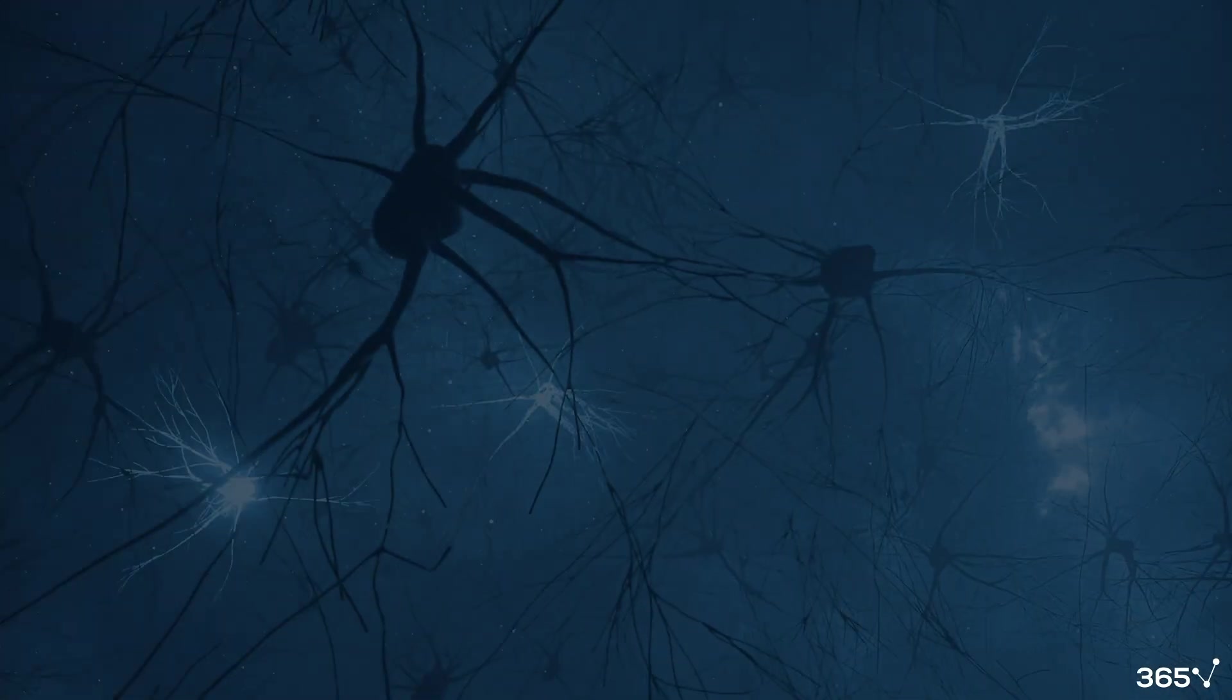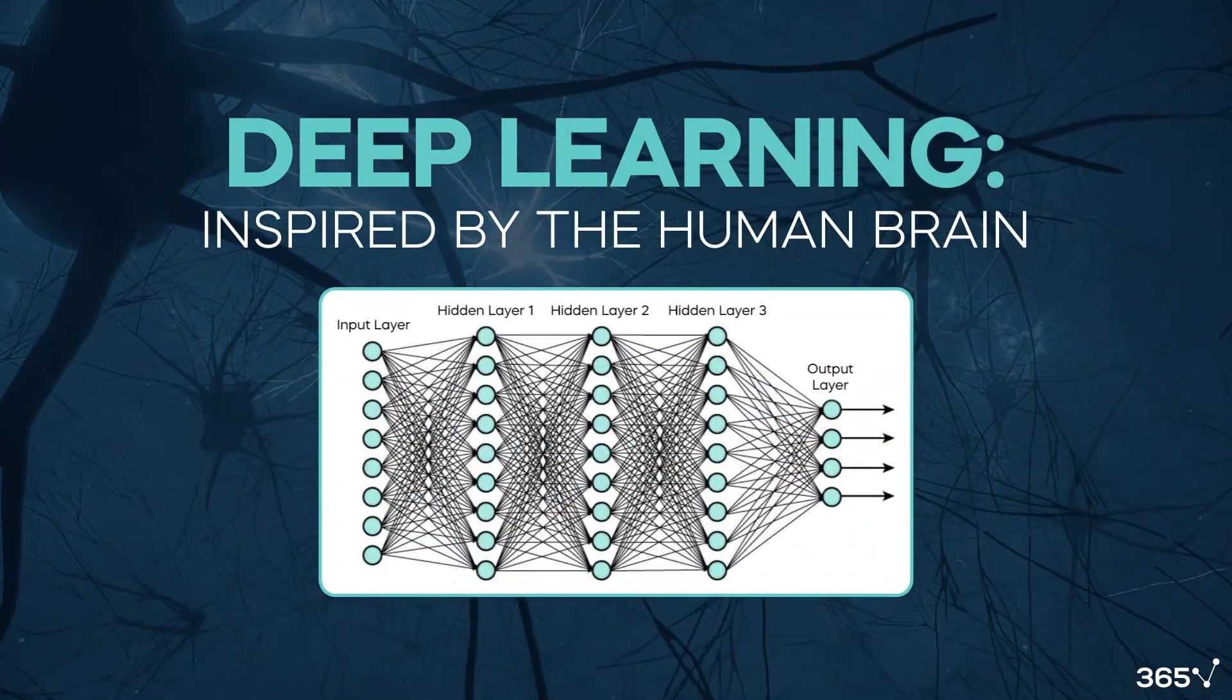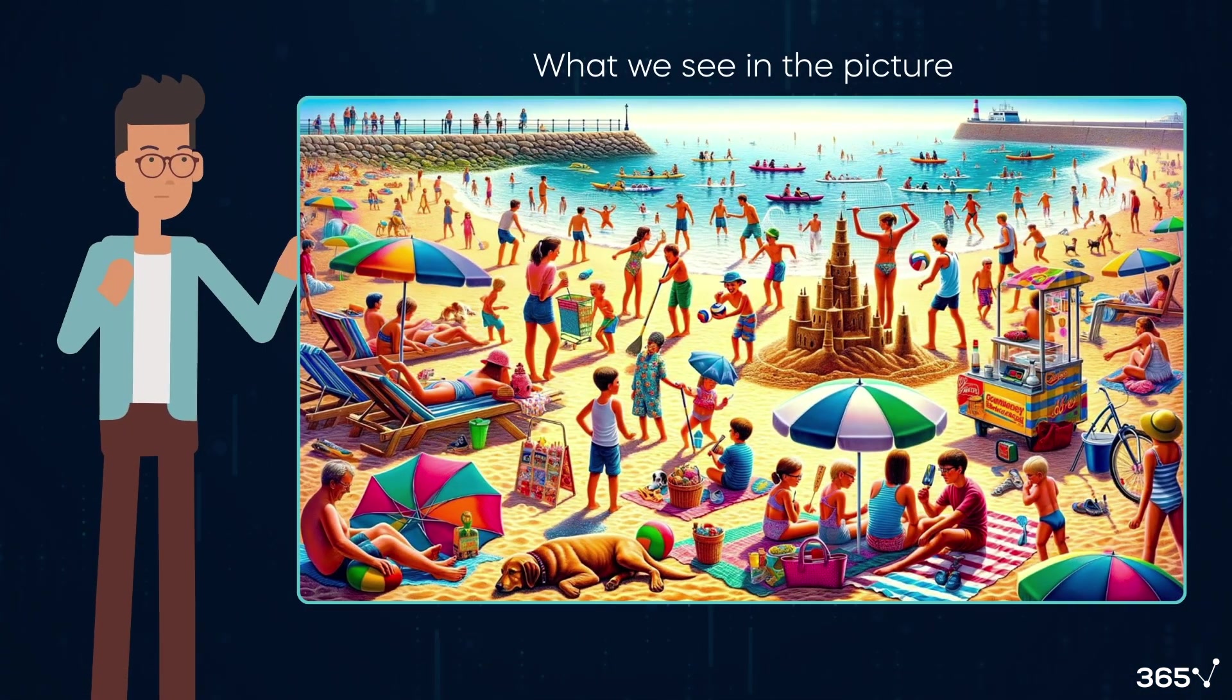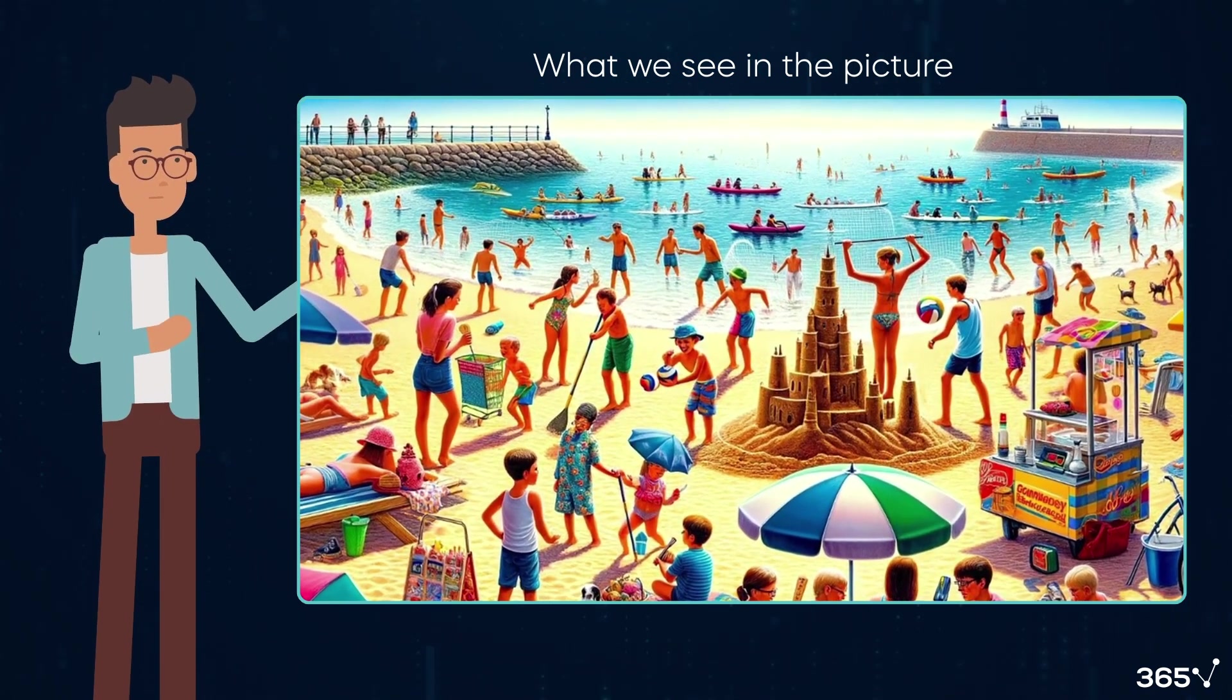Deep learning is a fascinating subset of machine learning, inspired by how the human brain works. Here's an AI-generated image. What do you see at first glance? It's a sunny day and a crowded beach, right?